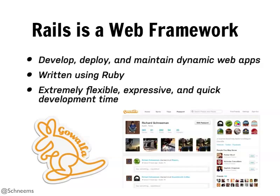Rails is a framework - Gowalla is built on top of it. It's very expressive and very easy to develop in. It is not the quickest of languages in terms of actual runtime, but the trade-off is that you as a developer can build things quicker. And computers are cheap - developers aren't.